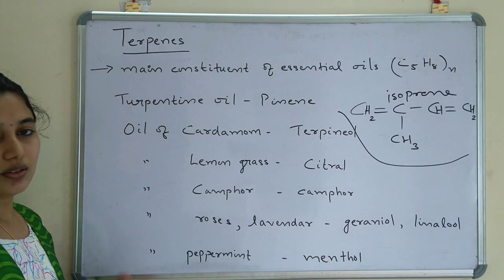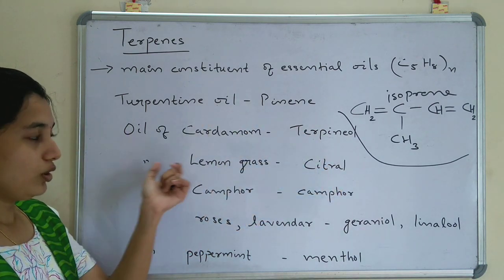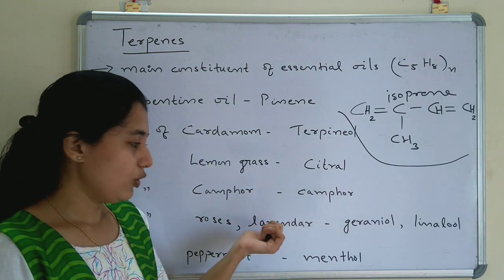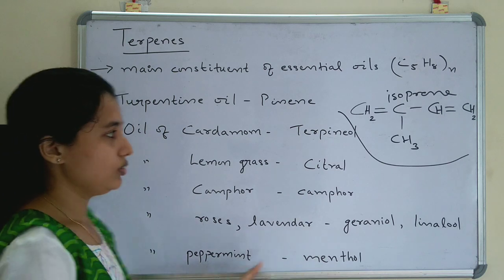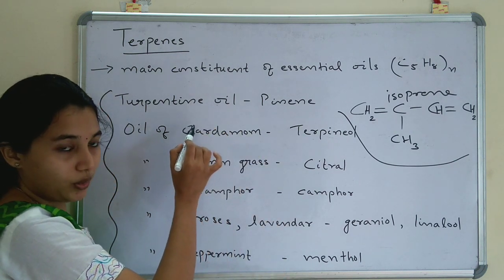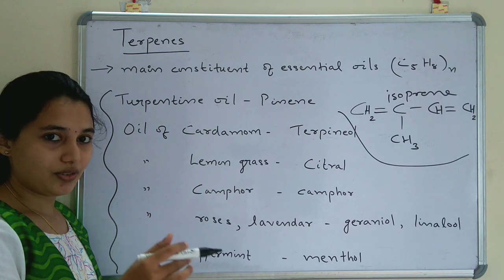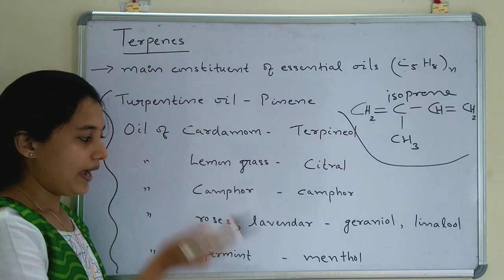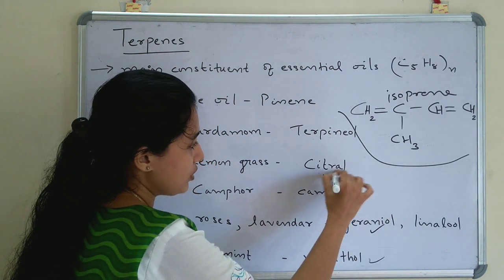Key essential oils and their terpene constituents to remember: turpentine oil contains pinene; oil of cardamom contains terpineol; oil of lemongrass contains citral; oil of camphor contains camphor; oil of roses contains geraniol; oil of lavender contains linalool; and oil of peppermint contains menthol. The most important ones are menthol, geraniol, citral, and camphor.